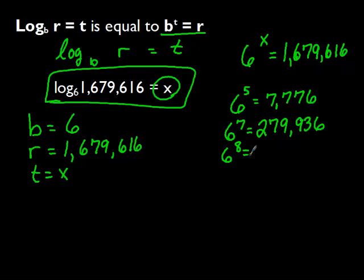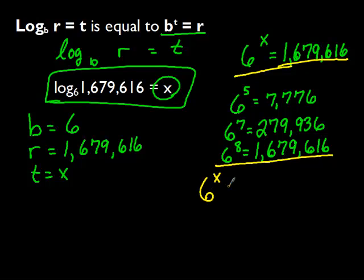Type into your calculator 6 to the 8th power. We get 1,679,616. If we look, the numbers are the same. This tells us that 6 to the x is equal to 6 to the 8th, which tells us that x equals 8.